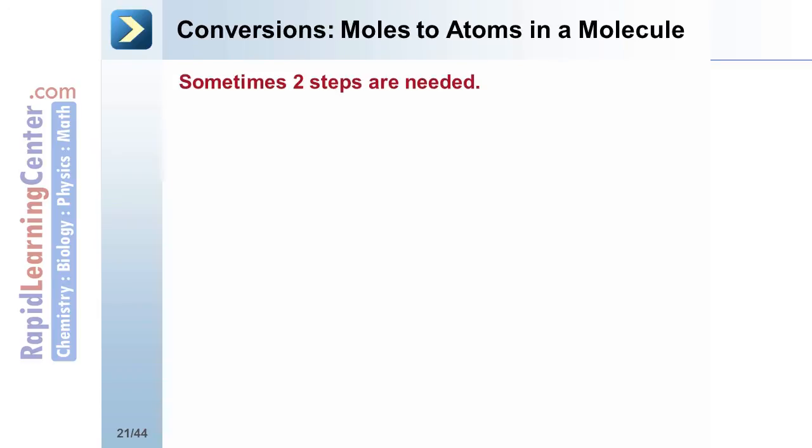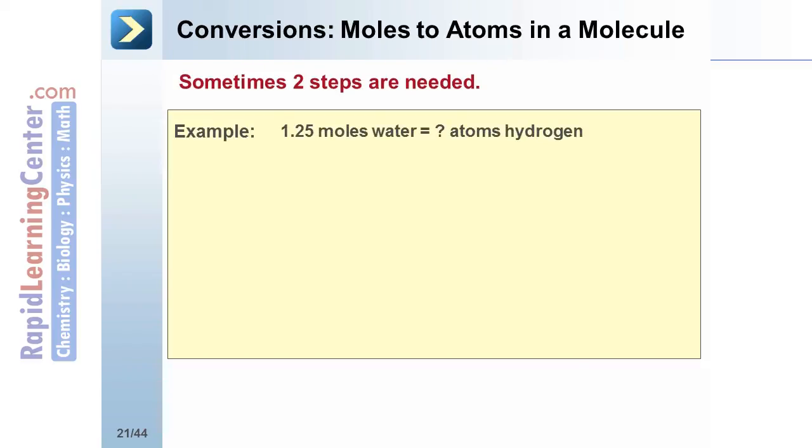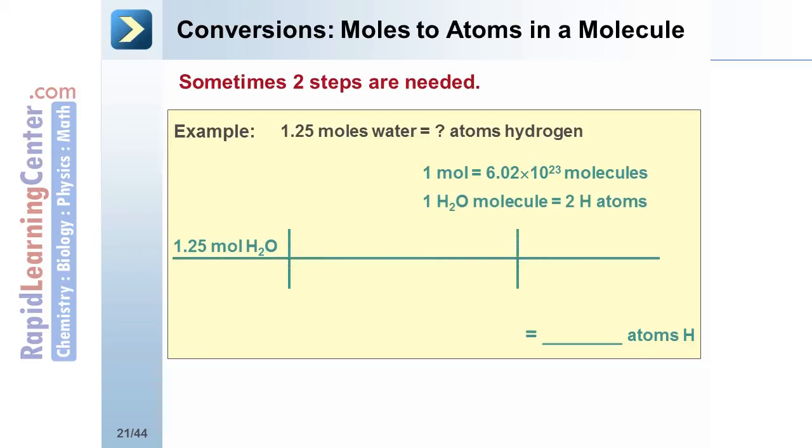Sometimes, two steps are needed in a conversion. For example, how many atoms of hydrogen are in 1.25 moles of water? The given information is 1.25 moles water. The desired information, the unknown, is atoms of hydrogen. The first equivalent, 1 mole, equals 6.02 times 10 to the 23rd molecules. But a second equivalent is needed in order to get to hydrogen atoms. Arrange the first equivalent to cancel moles. Arrange the second equivalent to cancel molecules water. Multiply the numbers across the top and divide the numbers on the bottom. 1.51 times 10 to the 24th atoms of hydrogen.